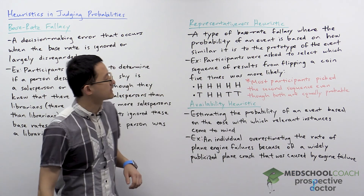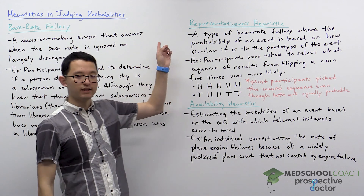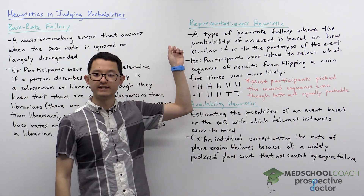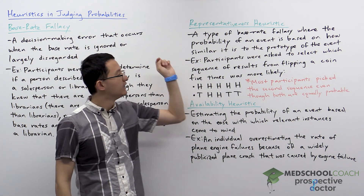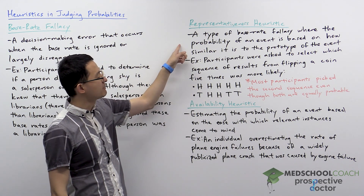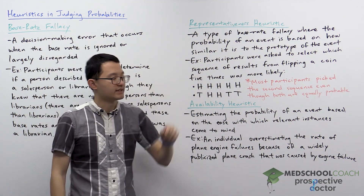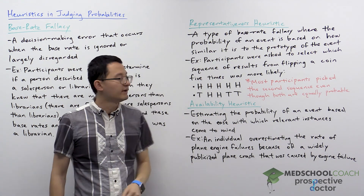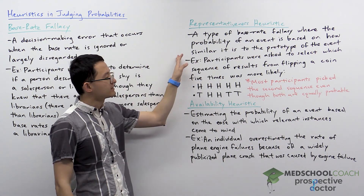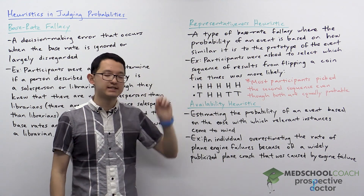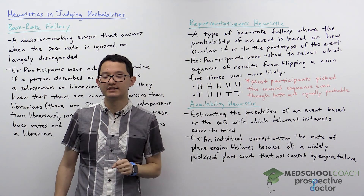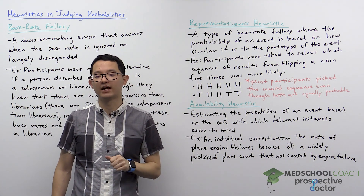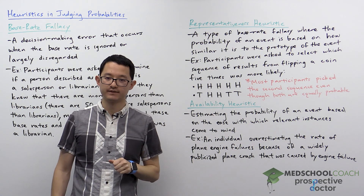Next, let's go over the representativeness heuristic. This is a type of base rate fallacy where the probability of an event is based on how similar it is to the prototype of the event.